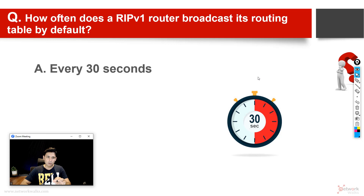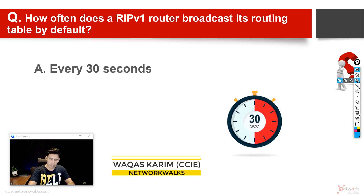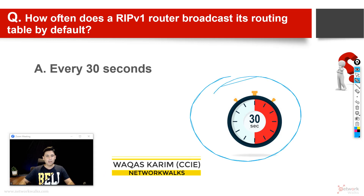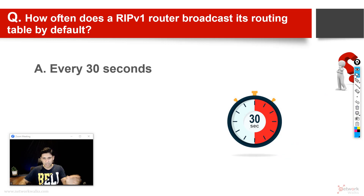Another interview question an interviewer might ask is: how often does a RIP version 1 router broadcast its routing table by default? After how many minutes or seconds does it keep sending updates to its neighbors? The answer is every 30 seconds. So after a timer of 30 seconds, the RIP-enabled router will keep sending its update to its neighbors, notifying them of what it has in its routing table. Each router keeps sharing with each other.